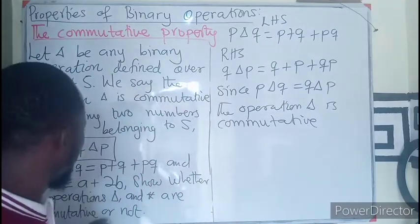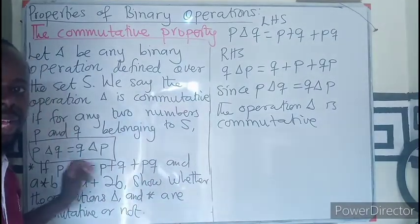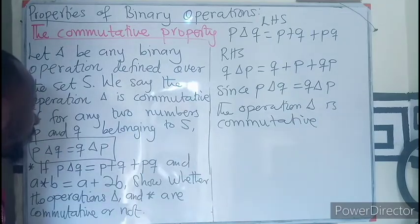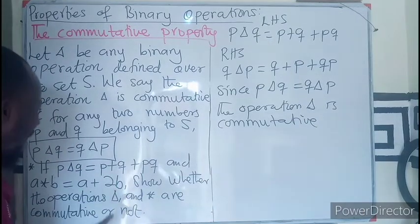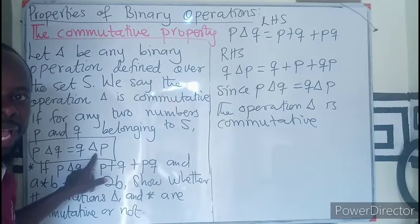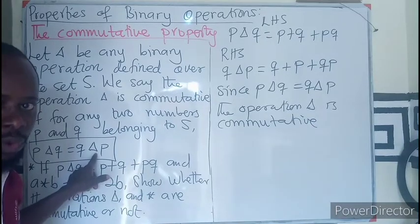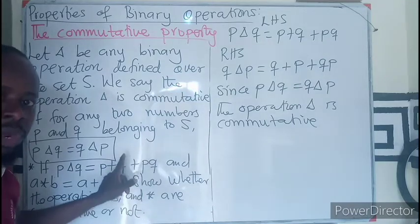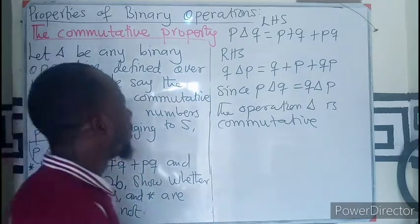So our first operation, as we stated here, is commutative. It can be used to explain a commutative property. That does not mean that every delta in any binary operation is commutative. It will become commutative based on the definition of that operator.